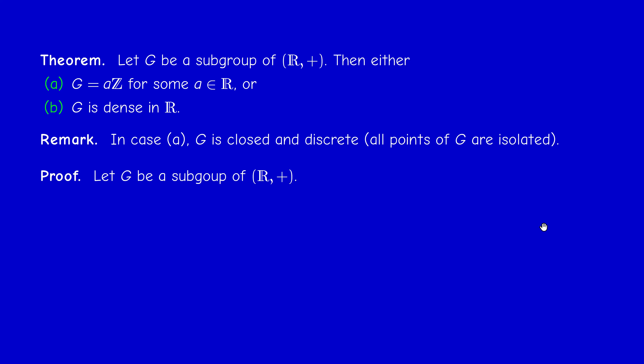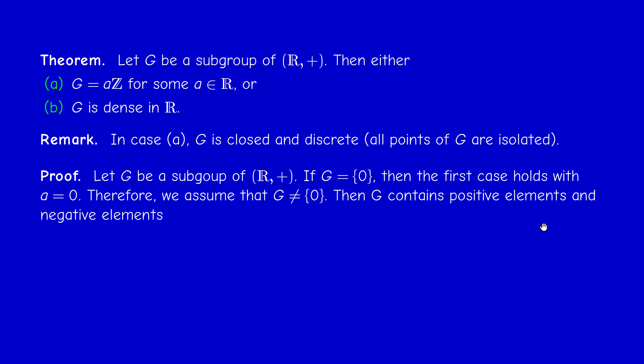Let us prove this. If G is a subgroup of R+, we have a trivial case: if G is the trivial group, then G is of the form 0·Z. So we assume now that G contains an element different from zero. Since G is a group, G contains positive numbers as well as negative numbers, because G is stable under the operation of taking the opposite. So if a is in G, then -a is in G, and among a and -a, one is positive.